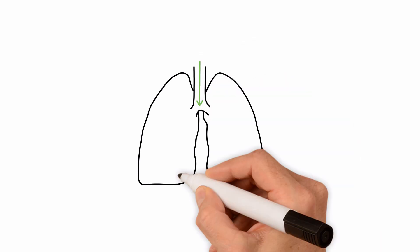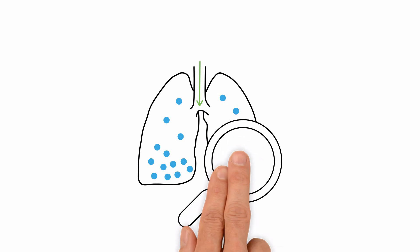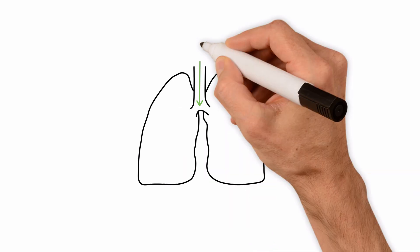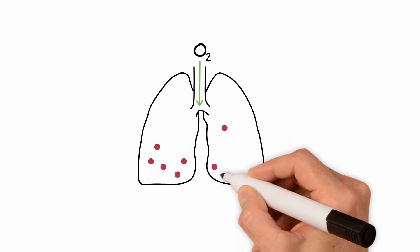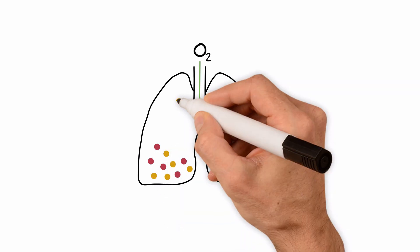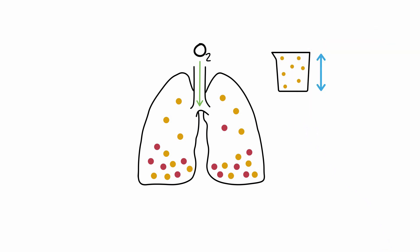With inspiration, most inspired gas goes to the bases where there are more alveoli and where the alveoli are less distended than those in the apices and hence can expand more. As a result, the inhaled pure oxygen is primarily distributed to the bases, diluting the nitrogen in that region, and accounting for a concentration difference in nitrogen between the apices and the bases.